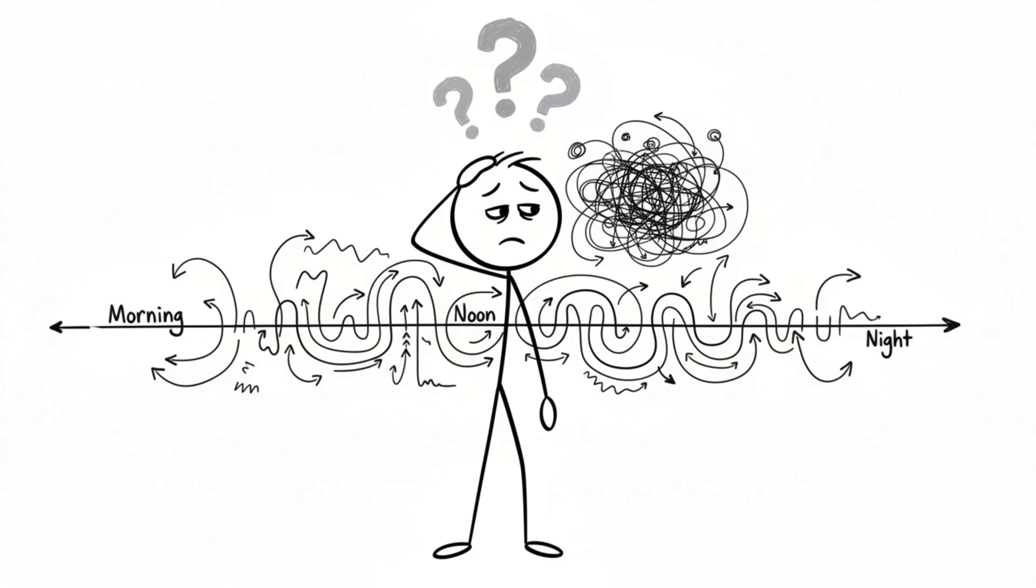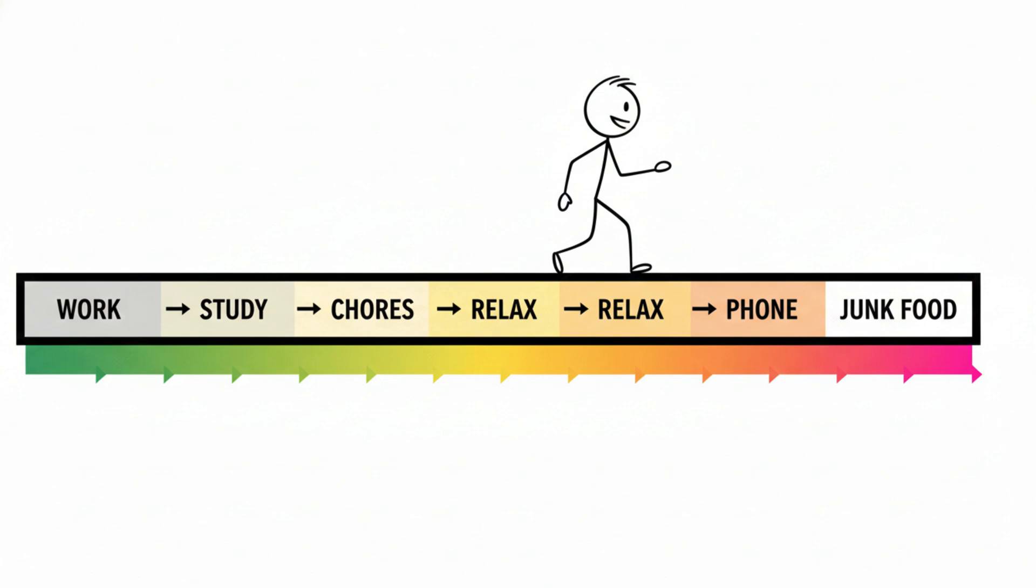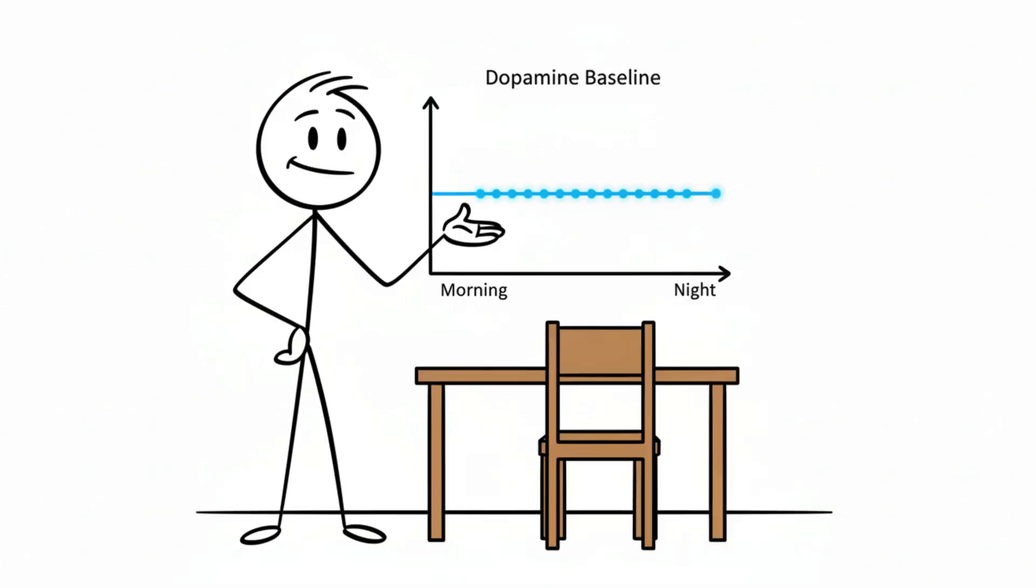If that was difficult to understand, you want to do the tasks in your day, starting from low dopamine releasing tasks and moving up into high dopamine releasing tasks. That way, your baseline will not drop throughout the entire day.